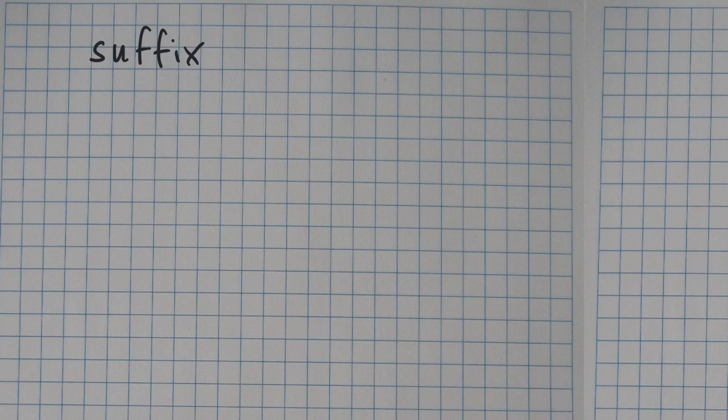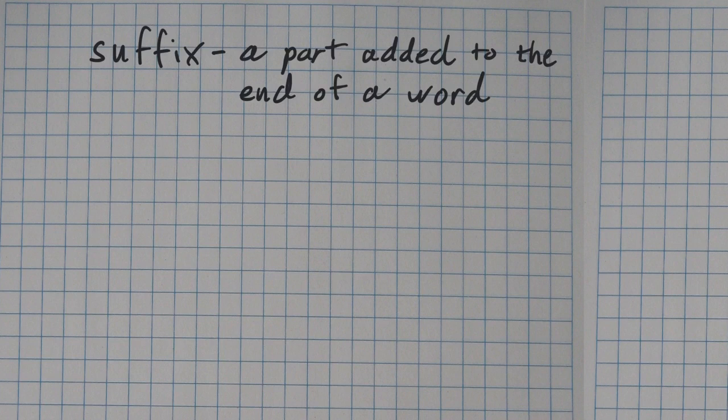So a suffix is a part added to the end of a word. Before we did prefixes, which was the beginning of the word; a suffix is a part added to the end of a word. For example, if you have the word quietly, -ly is your suffix.